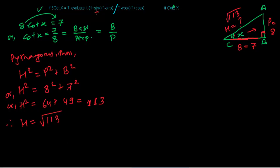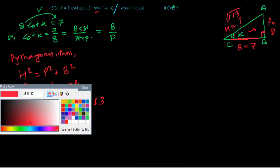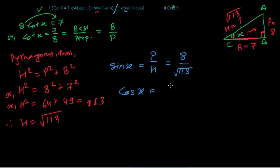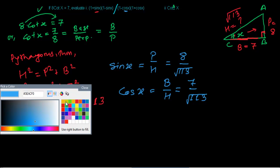Let's find sin(x) and cos(x). Sin(x) = perpendicular / hypotenuse = 8/√113. Then cos(x) = base / hypotenuse = 7/√113. Now that we have sin(x) and cos(x), we can solve both expressions.